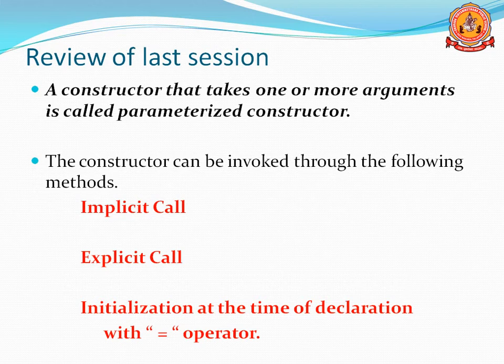A constructor that takes one or more arguments is called a Parameterized Constructor. So whenever arguments are present in a constructor, that is known as a Parameterized Constructor. And a Parameterized Constructor can be invoked through the following methods: one is implicit call, explicit call, and using the assignment operator.